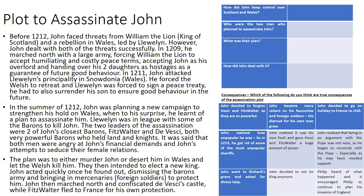Before the events of 1212, it's worth noting that John had successfully dealt with threats from William the Lion, King of Scotland, and a rebellion in Wales led by Llywelyn. In 1209 he marched north, forcing William the Lion to accept peace terms, accept John as overlord, and hand over his daughters as hostages. In 1211 John attacked Llywelyn's principality in Snowdonia, forcing the Welsh to retreat; Llywelyn signed a peace treaty and surrendered his son to ensure good future behaviour.